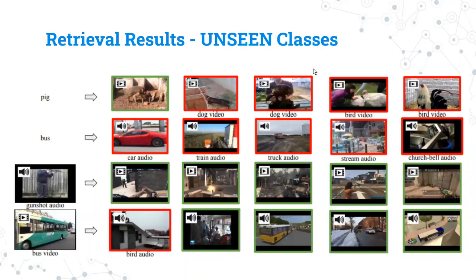Now, this is very different than with the unseen classes. When a pig is given, only one out of the five videos returns a pig video. Same with the bus. However, in this situation, all of these are similar, except for the church bell audio, and the stream audio to the classification, meaning that their distance is similar to bus. Then the gunshot audio returns all gunshot videos, which is a nice and pleasant surprise. And then again, the bus video returns all bus audios except for one bird audio.